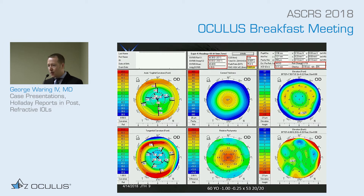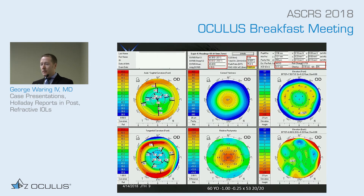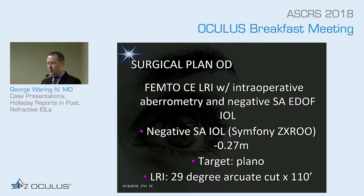So how do we use it? Well, first off, we're going to use the spherical aberration information and customize the IOL choice based on the spherical aberration. This is 0.60 to 0.61 microns of positive spherical aberration — you don't even need aberrometry to tell you that, you can just see how oblate this cornea is. So we want to pick the highest negative spherical aberration profile lens available, which is the Tecnis platform in the United States — 0.27 microns of negative spherical aberration to offset as much of that positive spherical aberration as we could.